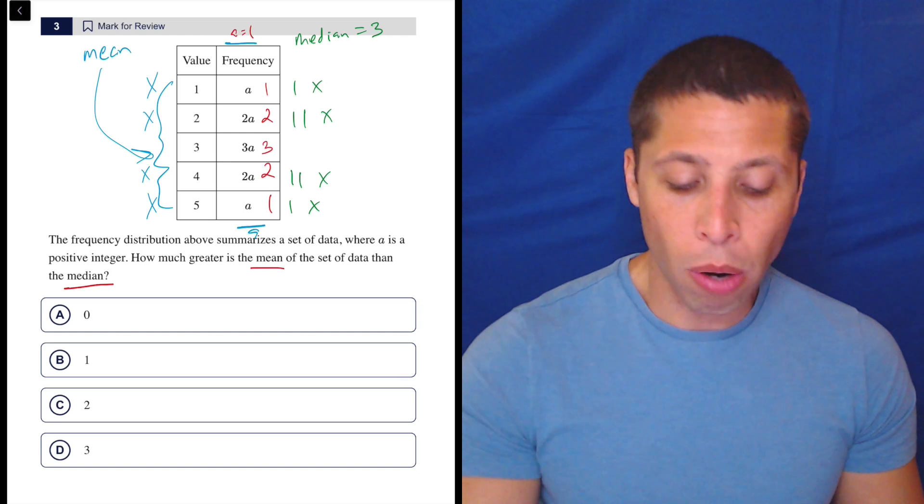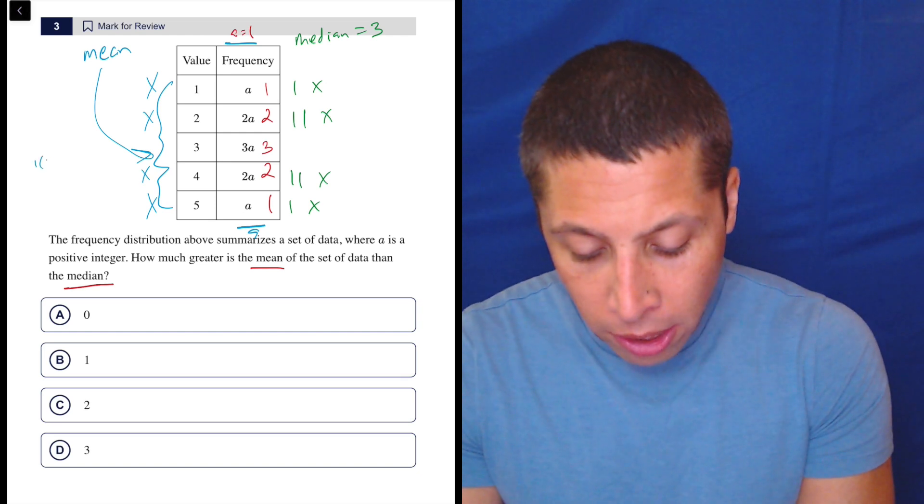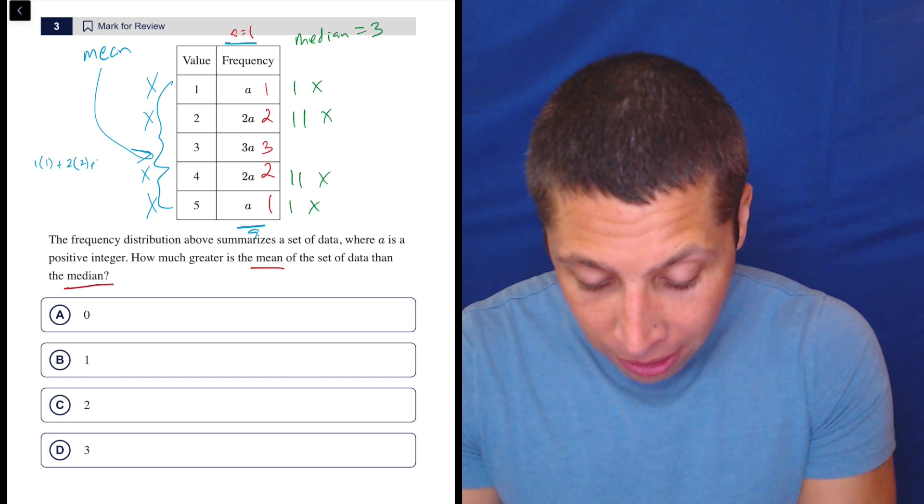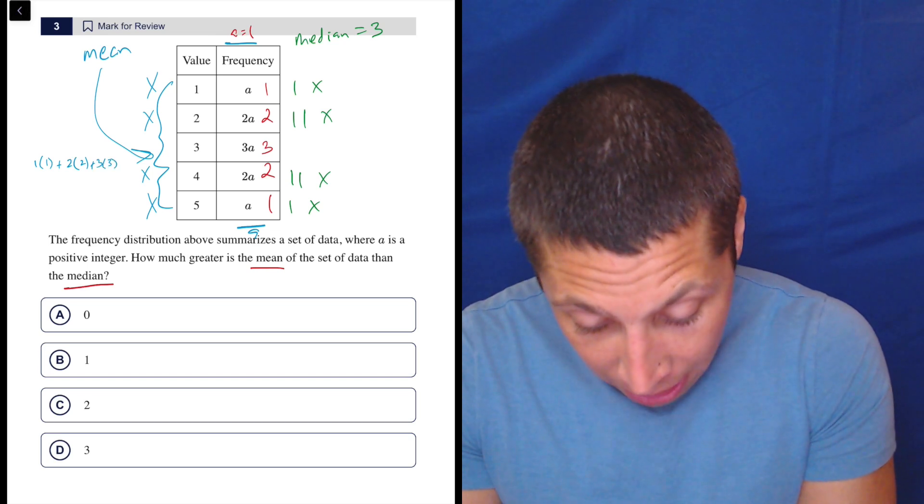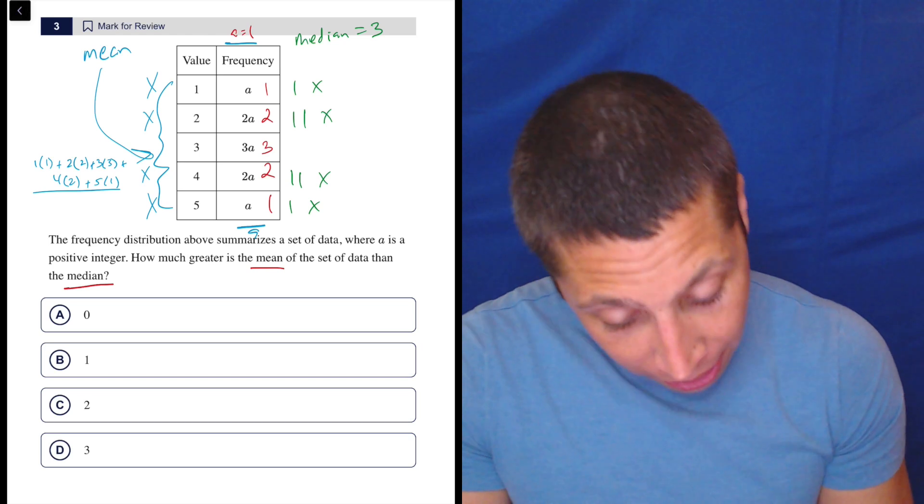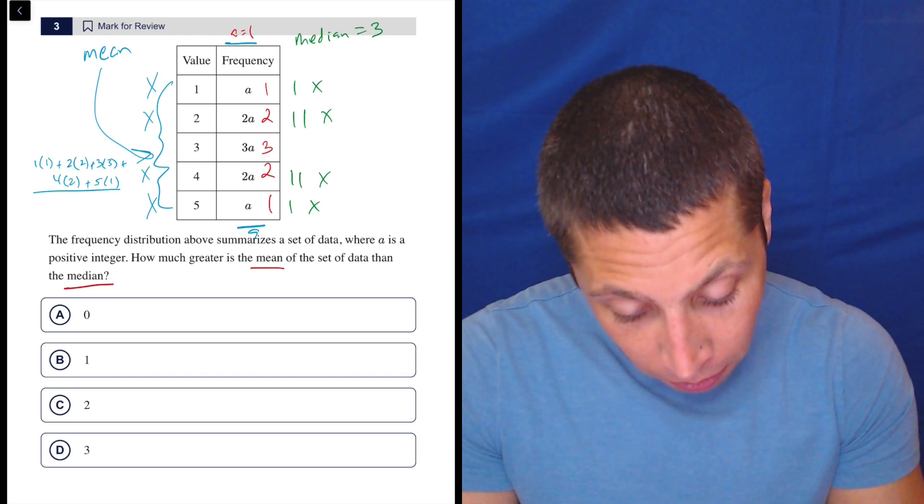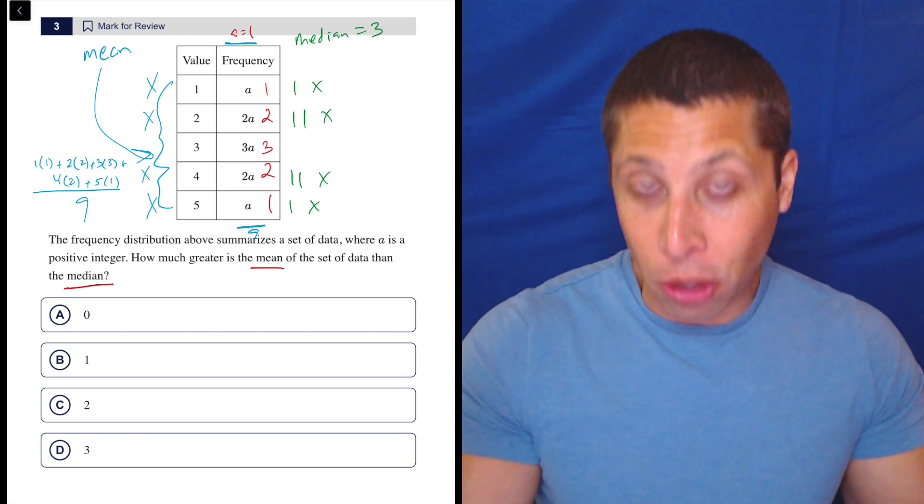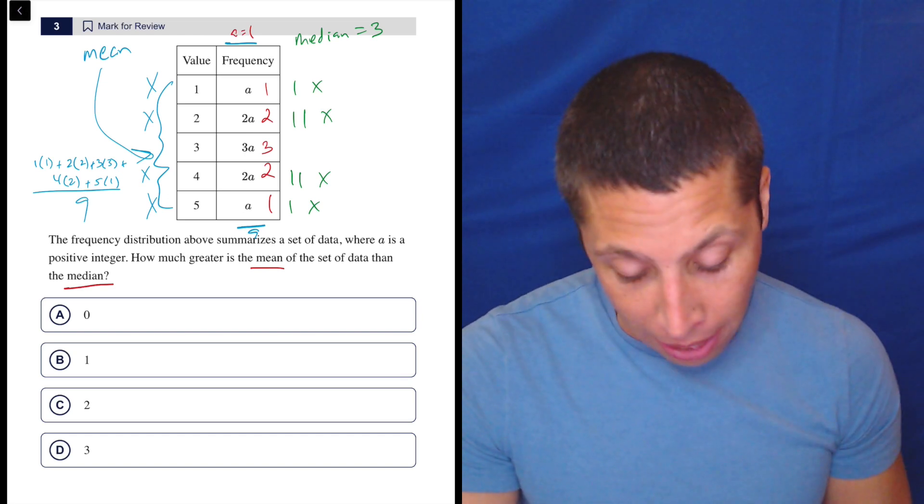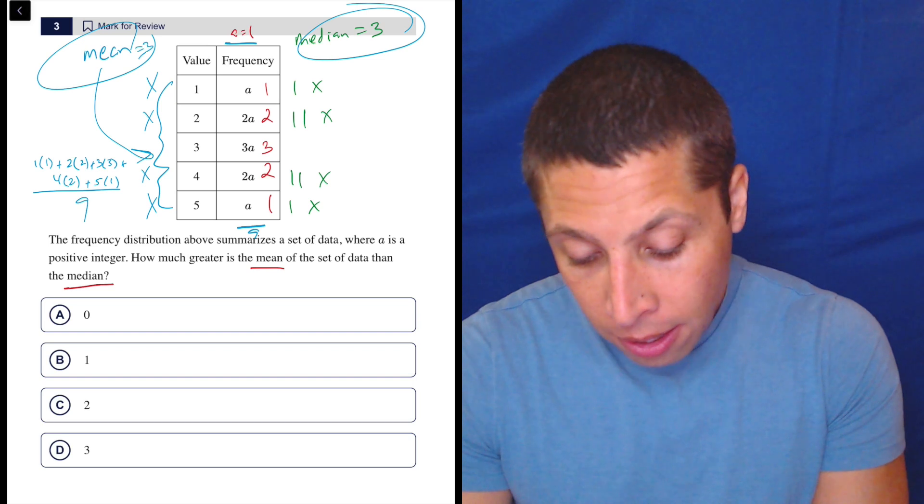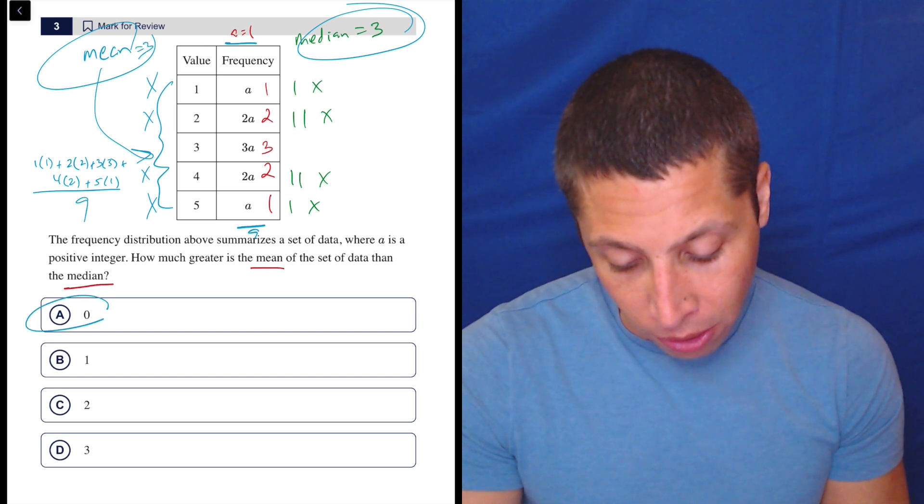Again, if that bothers you, just throw it in the formula. You're going to do 1 times 1 plus 2 times 2 plus 3 times 3 plus 4 times 2 plus 5 times 1 divided by 9. And it should give you a 3. Double check. I'm not going to bother. If I'm wrong, put in the comments. But that means if the mean and the median are both 3, then what's the difference between them? There's no difference. The answer is 0.